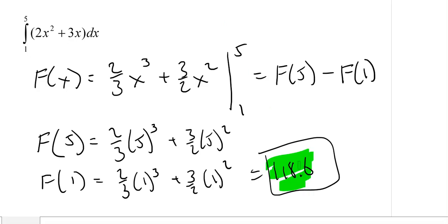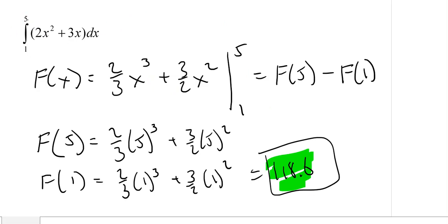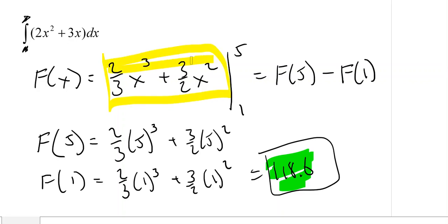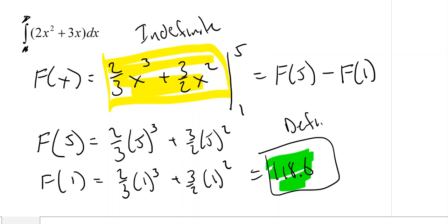Just to make a comparison: if the upper and lower bounds were not here, it would simply mean find the antiderivative, and the answer would be the antiderivative plus c. That's the difference between the indefinite integral and the definite integral — with the definite integral, we use the fundamental theorem of calculus to get a number.